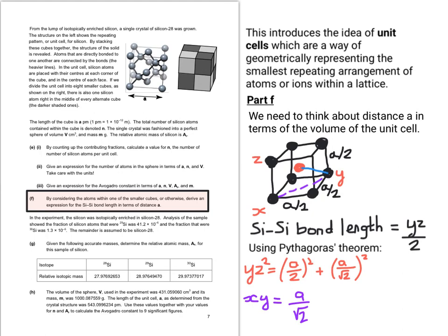Using the same idea, y, z squared is a over two squared plus a over root two squared. To get y, z, we can square root all of that. We can simplify to root three over two, a. But like we said a bit further up, y, z is actually twice the bond length. Therefore, we have to divide root three a by four, not root three a by two.